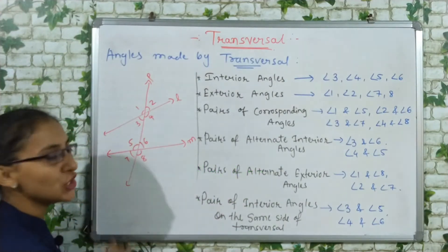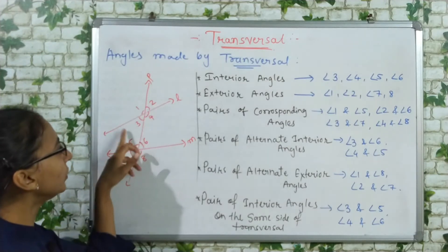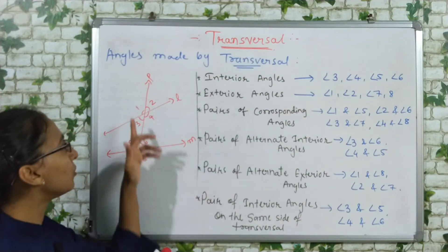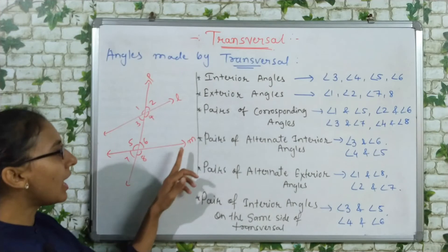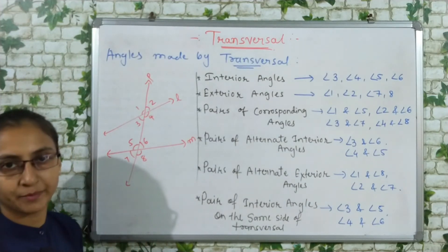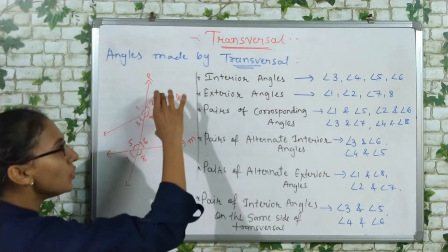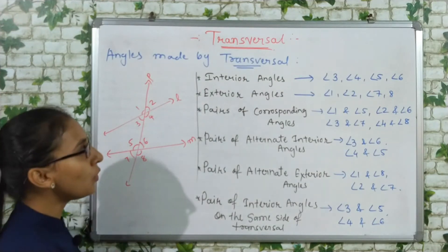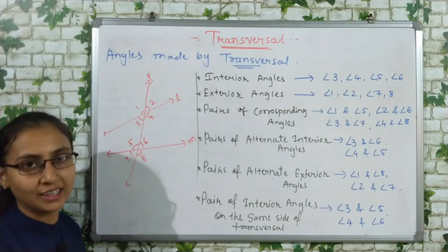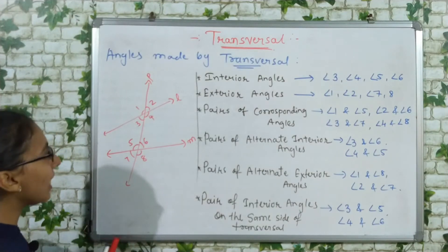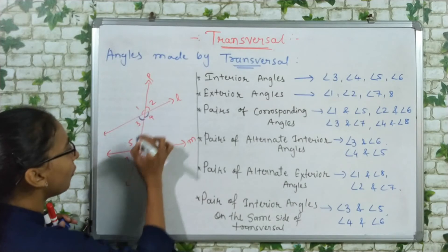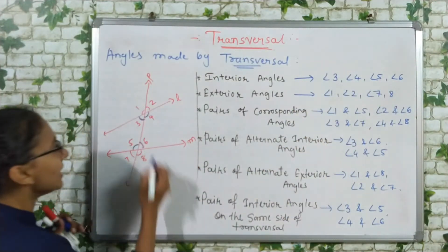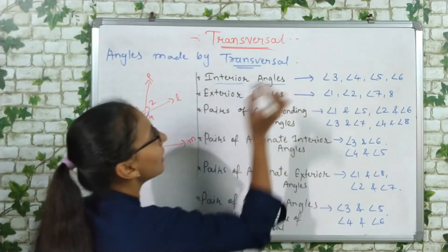In this figure, we have named certain angles. The angles at the intersection of line l and line p are numbered 1, 2, 3, 4. The angles at the intersection of line m and line p are numbered 5, 6, 7, 8. First, let's talk about interior angles. 'Interior' means the inside part — the area between the two lines. So the interior angles are 3, 4, 5, and 6.